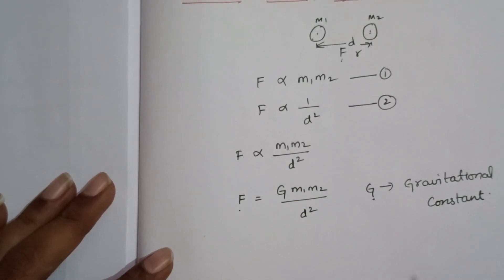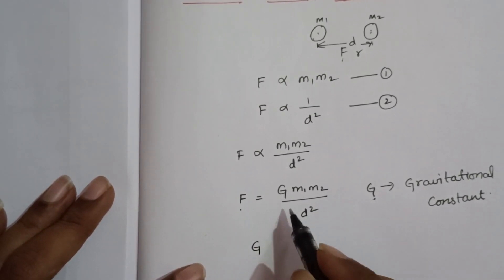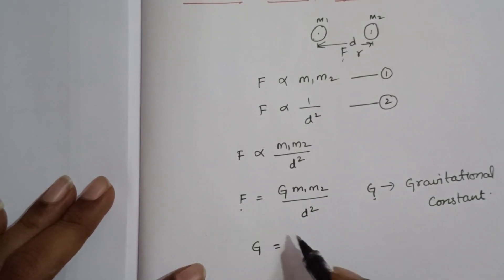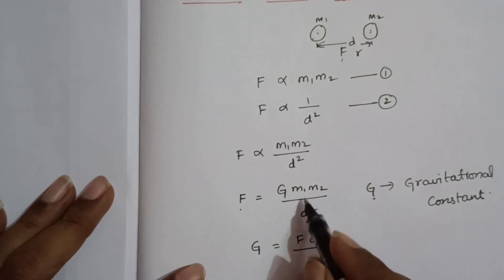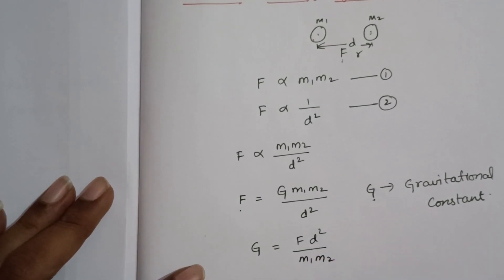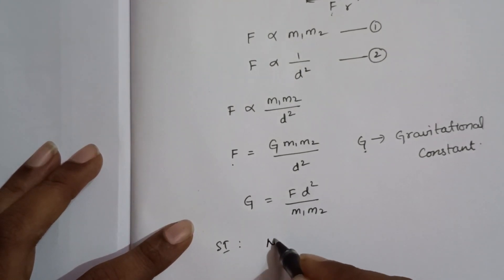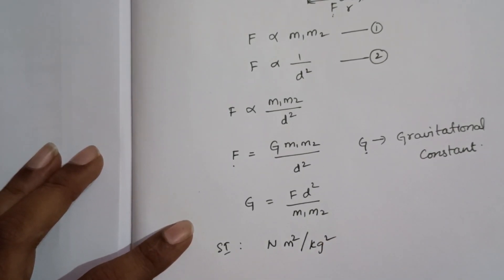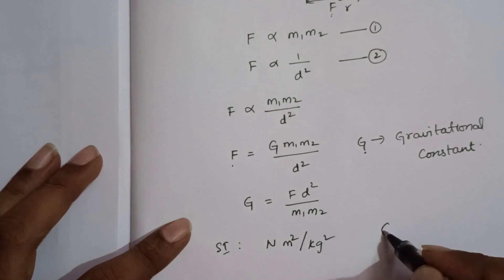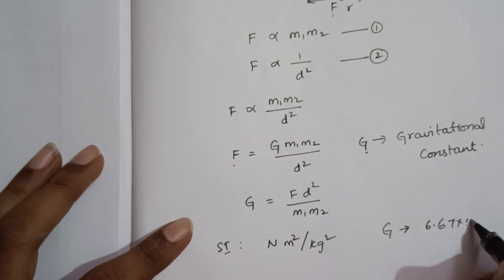From the formula, we can derive: G equals F times D squared divided by M1 times M2. The SI unit of the gravitational constant is Newton meter squared per kilogram squared. The value of G is 6.67 times 10 to the power minus 11 Newton meter squared per kilogram squared. This is a very important value to remember.